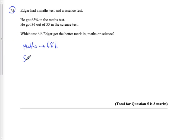And then for science, well, to turn 36 out of 55, I'm just going to do that division in my calculator. I'm just going to do 36 divided by 55, which is 0.654 and it goes 54545454.